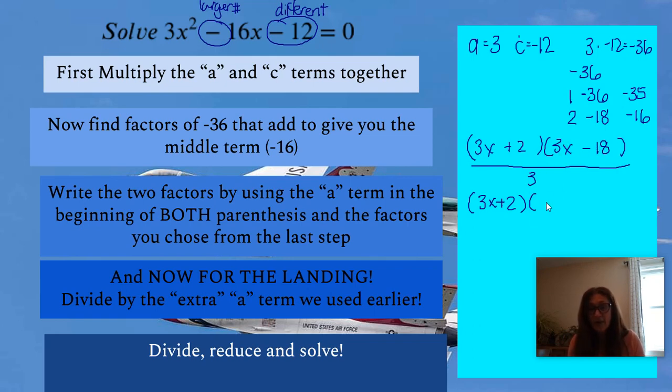So I'm going to get 3 divided by 3 is 1, so 1x. We don't need the 1, so just x minus 18 divided by 3 is going to give us 6. So there are our factors.